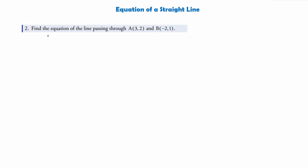Here's another example. We want to find the equation of the line passing through A(3, 2) and B(−2, 1). This time we don't have the gradient, but we can work it out because we have two points. We also don't have the y-intercept, but we do have a point which lies on the line — in this case we have two.